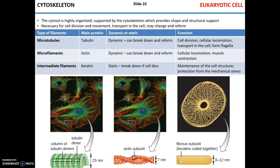Cell shape is maintained by the cytoskeleton. The cytosol by itself looks like a dense gel and cannot properly support the cell's shape alone. With the cytoskeleton, the cell can maintain its shape, grow, and divide. The cytoskeleton is also responsible for intracellular transport, and certain elements can be destroyed and reformed.